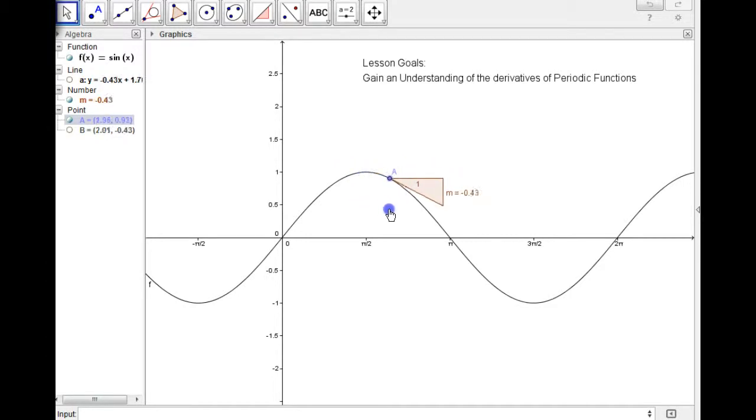And if we move back down, the gradient gets steeper and steeper, but negative this time, all the way to negative 1 when it's here, and then gets less steep and less steep and less steep, until it's at 0. And this continues all the way through the function.